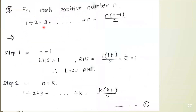We will see one more example. The next example is: for each positive number n, the series 1 plus 2 plus 3 plus dot dot dot plus n is equal to n(n+1)/2. This problem statement has two sides: LHS (left-hand side) and RHS (right-hand side). We have to prove the series is true using mathematical induction, which has three steps. Step number 1 is the base step, where we prove for the initial value.